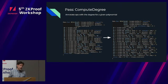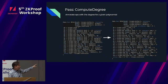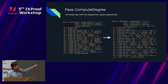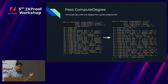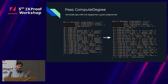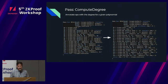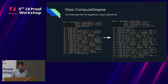We can also compute the degree. For every one of these expressions, we can determine how much degree we're using. Constants are zero, simple expressions are one, but when we use if statements and other combinations, that raises the degree. In our system, five is the maximum degree we can allow, so we check to make sure we stay within that limit.